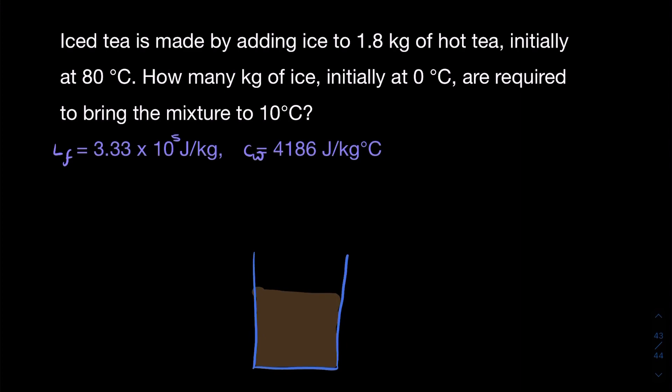This is a heat transfer question where we have a quantity of iced tea initially at 80 degrees Celsius, and we add ice at zero to bring its temperature down to 10 degrees. We need to know how much ice to add to achieve that. So basically it's a heat transfer question.